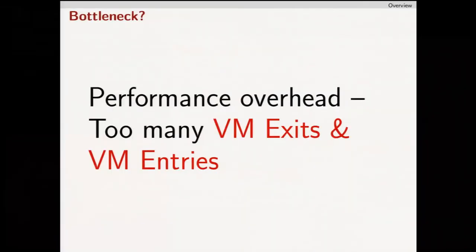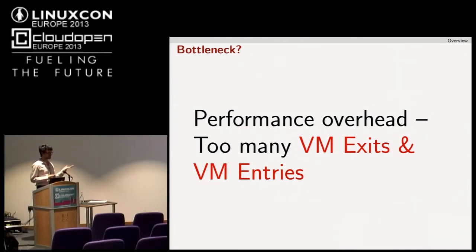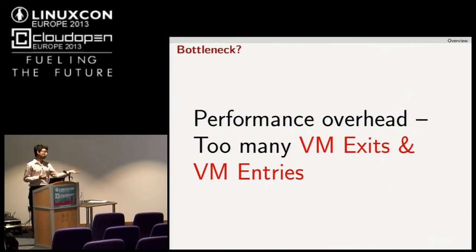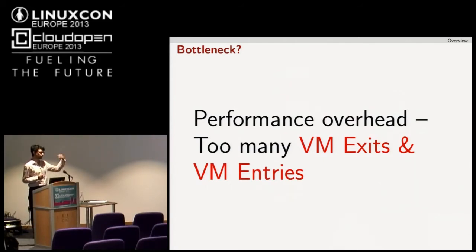The primary bottleneck is the number of VM exits and VM entries. Whenever a nested guest or guest hypervisor needs to execute a privileged instruction, it has to relinquish control to the host hypervisor. That is a costly operation. Privileged instructions include access to hardware resources like time and date, or something like a CPUID instruction.